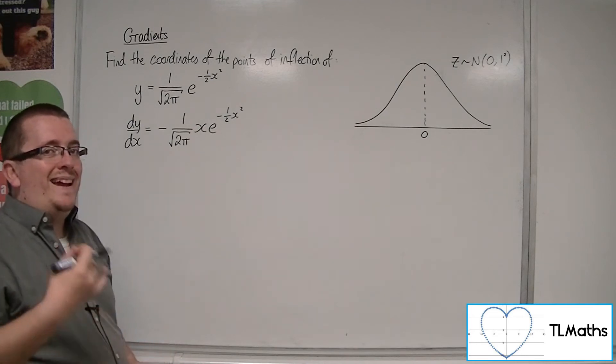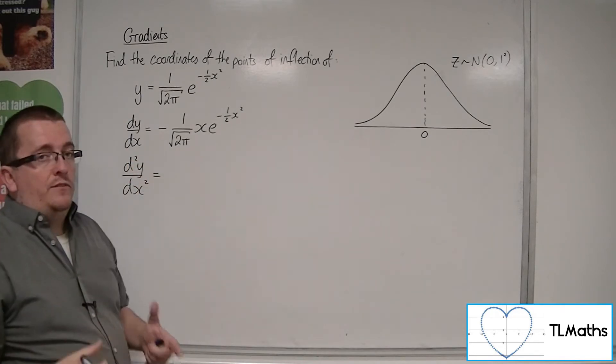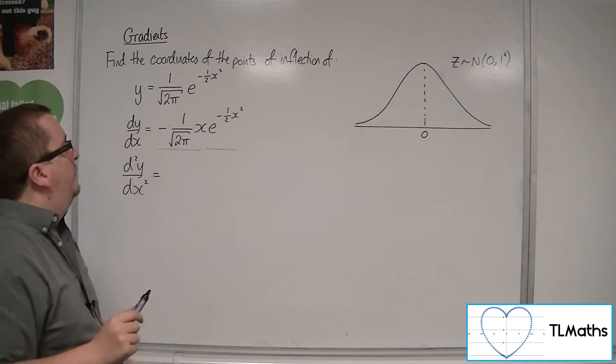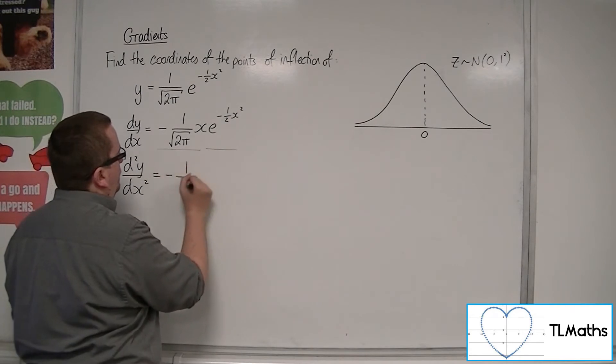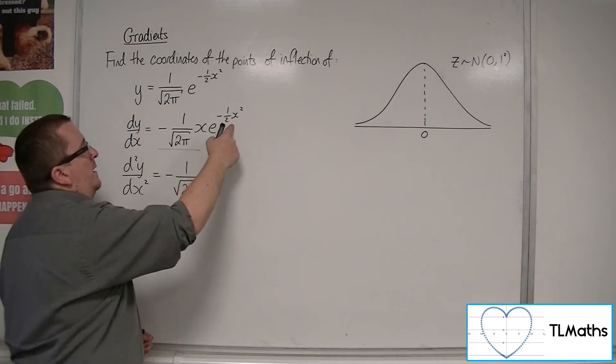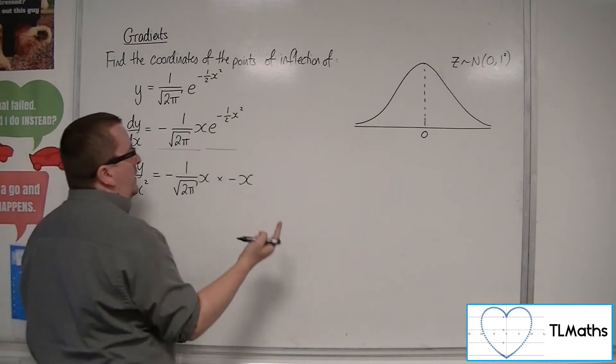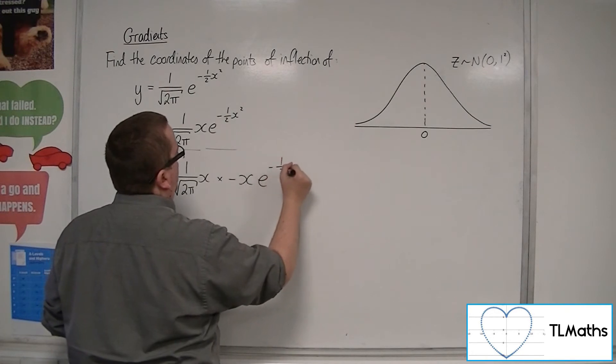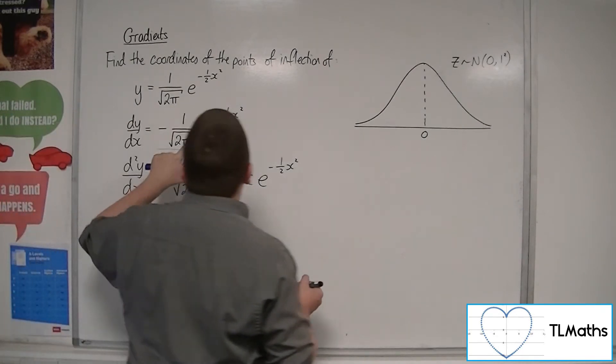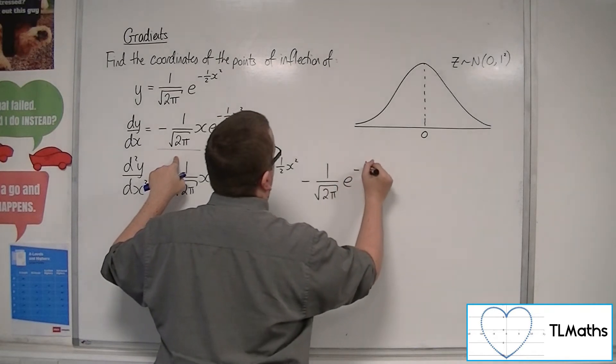So now we've got to differentiate that again. We've got to find the second derivative. So for that, we're going to have to use the product rule. I'm going to treat this bit as the first section and that as the second—the first function and the second function. So we've got the first times the derivative of the second. So using the chain rule again, we're going to multiply that by -x, because the derivative of this is going to be just -x because the -1/2 of 2x. So -x e^(-1/2 x²). And then we've got the second times the derivative of the first. Now the derivative of the first is just -1 over root 2π.